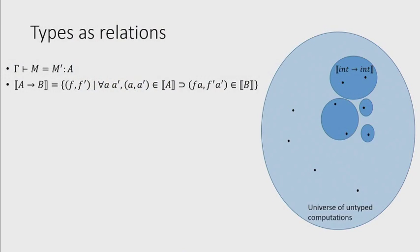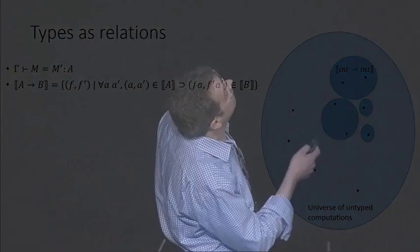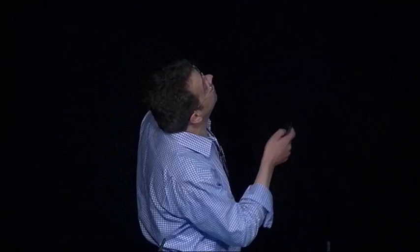And the kind of most important part of the definition of this kind of interpretation of types is the clause for functions, which I guess everyone's seen many times before, so it's a standard logical relations definition. It says two functions are related at type A to B if whenever you give them A-related arguments, you get back B-related results. So our view is very much that the computations exist beforehand, and then types are going to be properties of those programs.